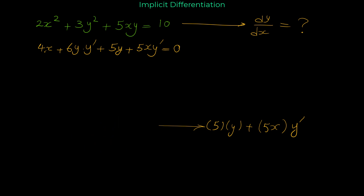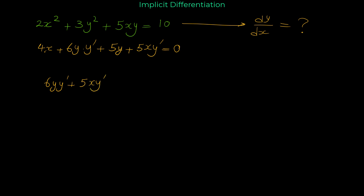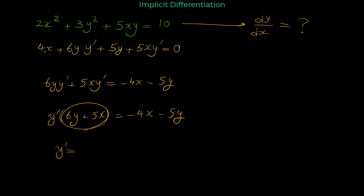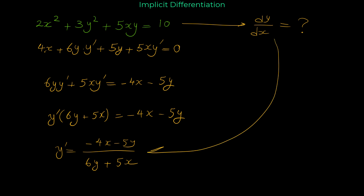We keep the terms with y prime on the left and move the others to the right: 6y·y′ + 5x·y′ = −4x − 5y. Factoring y prime: y′·(6y + 5x) = −4x − 5y. Dividing both sides: y′ = (−4x − 5y) / (6y + 5x). So dy/dx equals this.